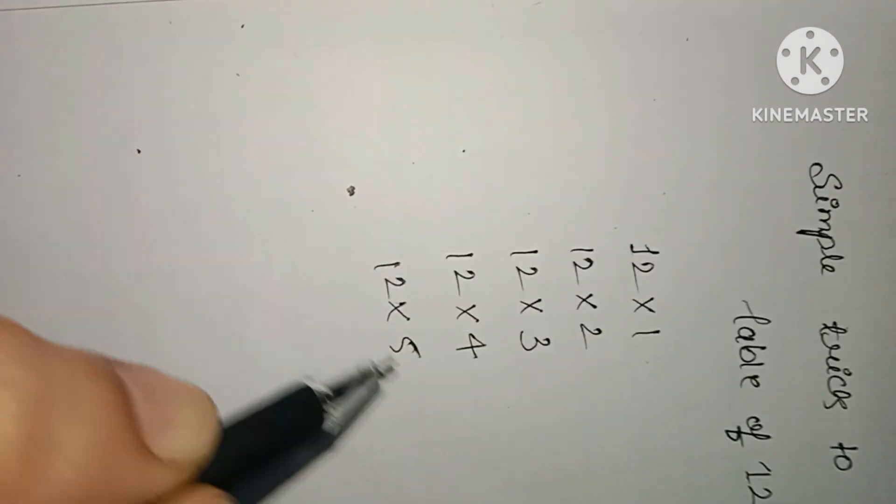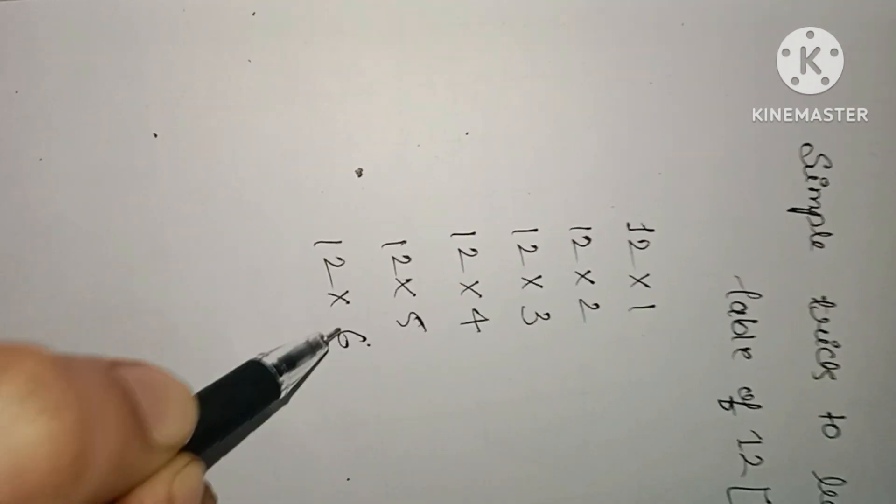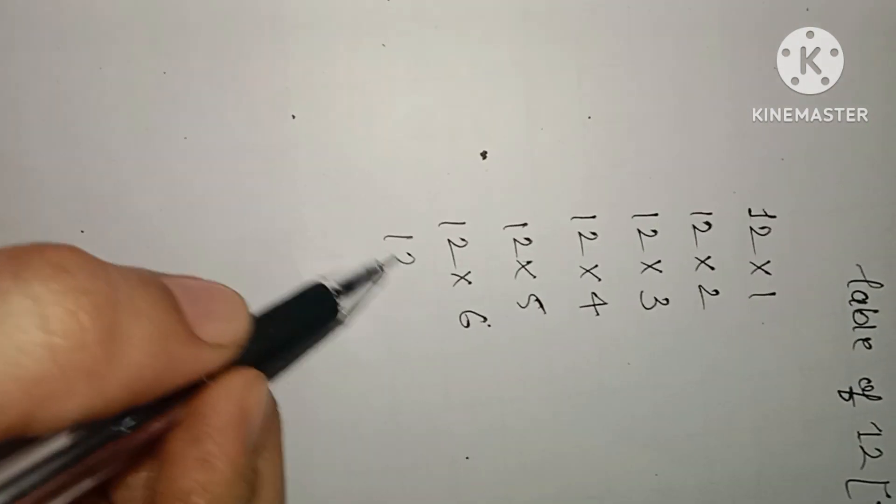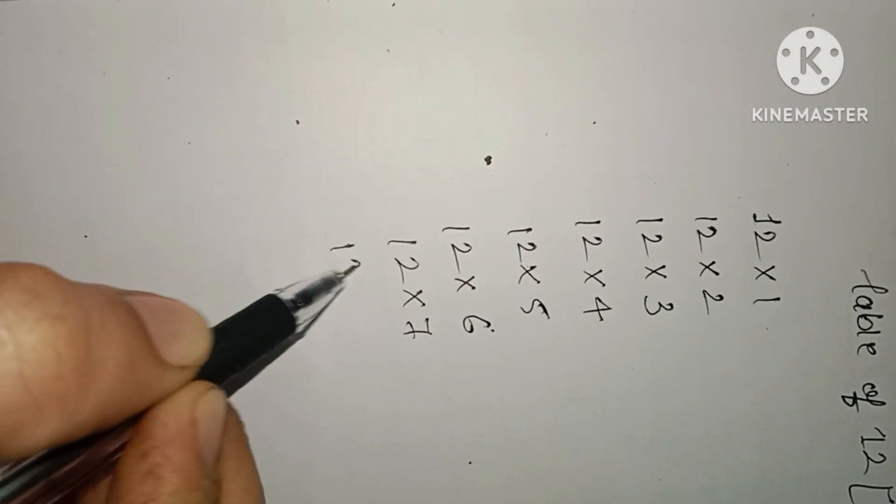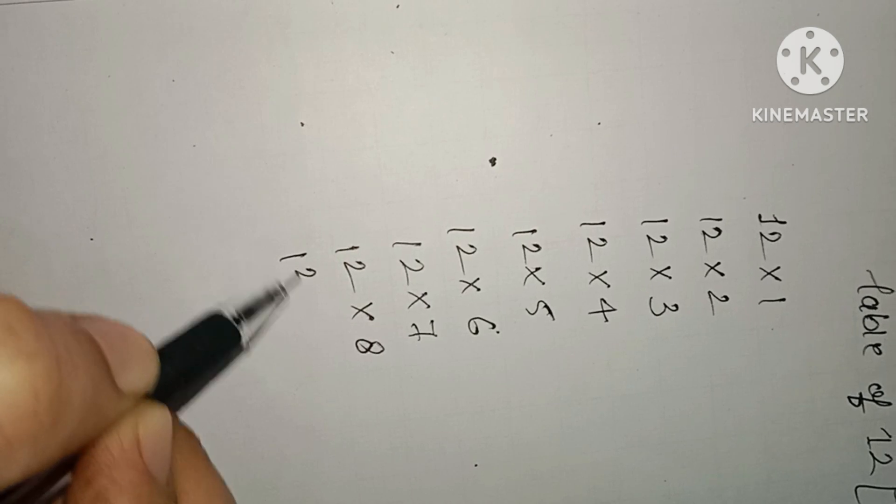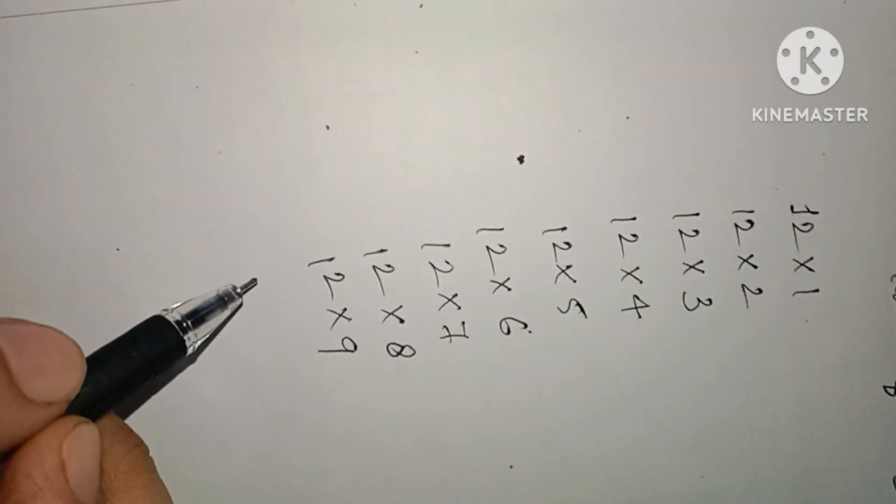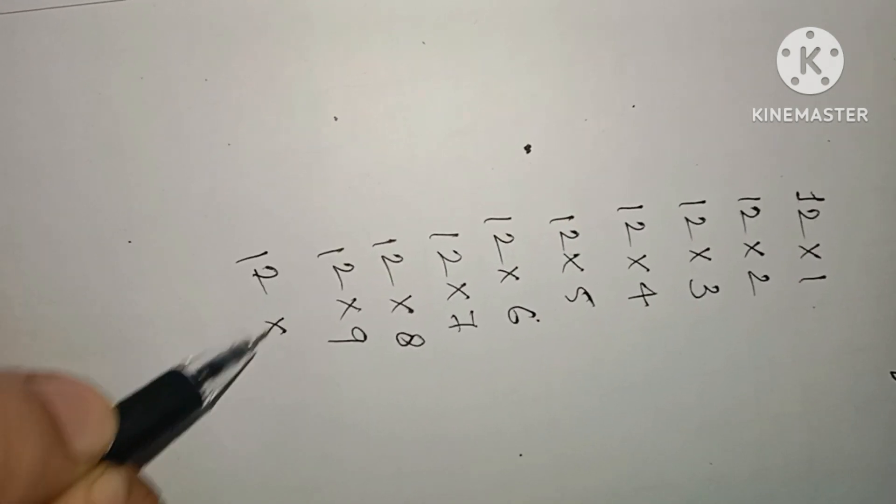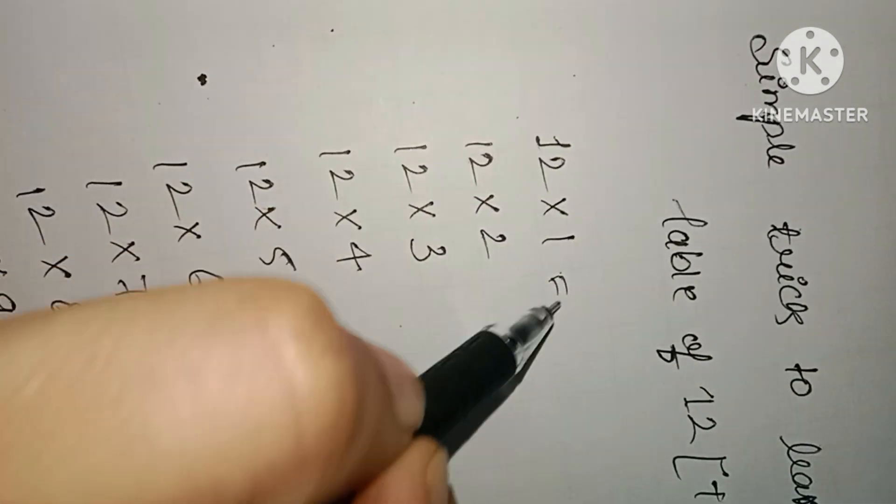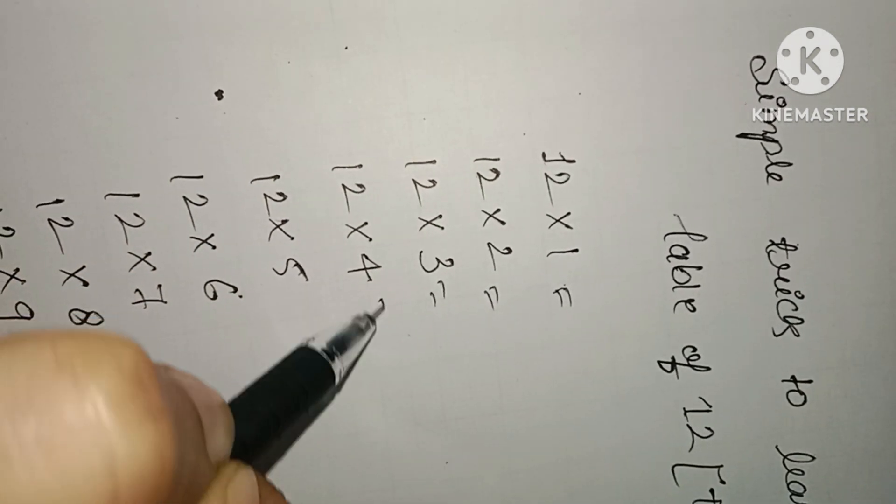And I will tell you a simple trick by which you can make your child learn it very easily. As I'm writing 12, 12, 12 times table, how you can make your child write this in a very easy way. You can see my earlier videos of table of 5.